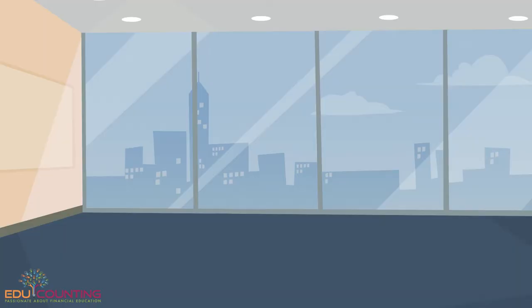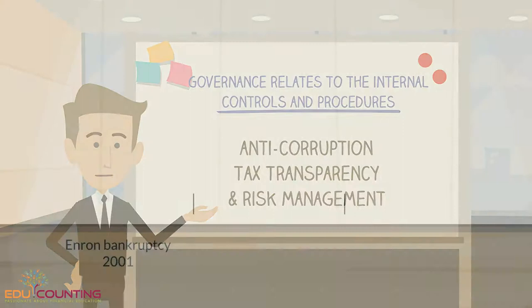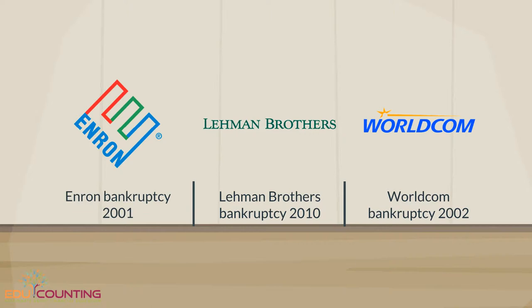Governance relates to the internal controls and procedures through which a company is managed. It can include such things as anti-corruption, tax transparency, and risk management. Investors may believe that companies with better governance policies have fewer issues and potentially less risk in a portfolio.